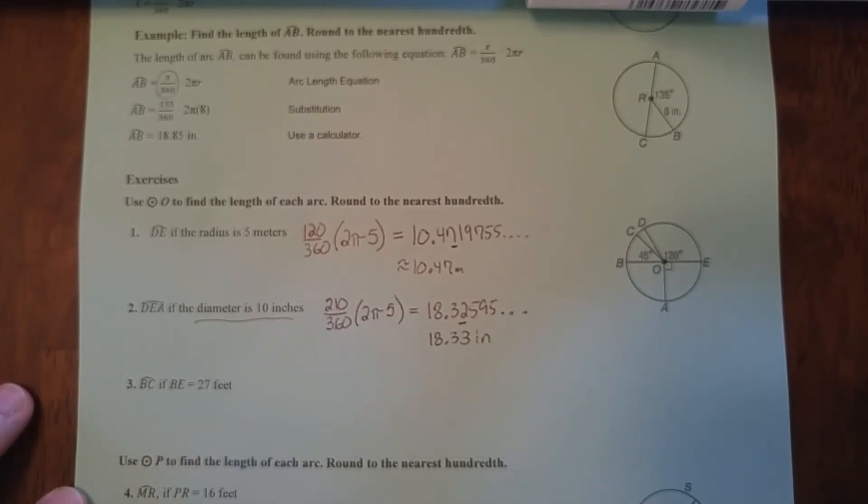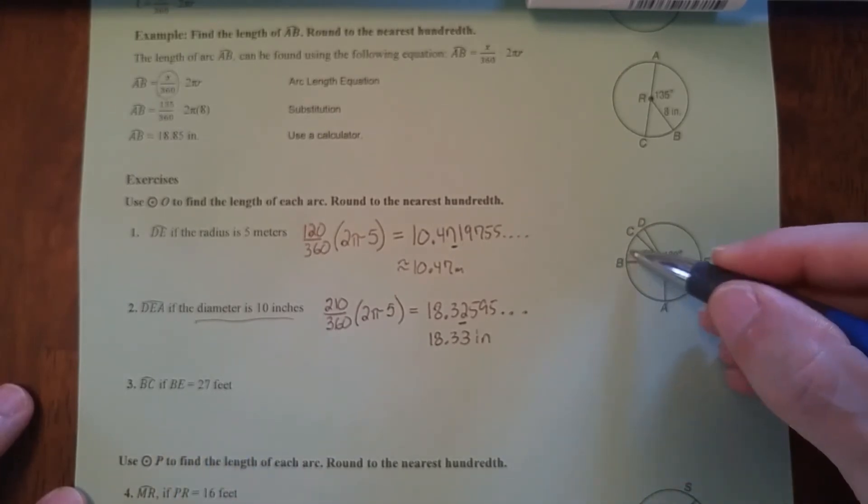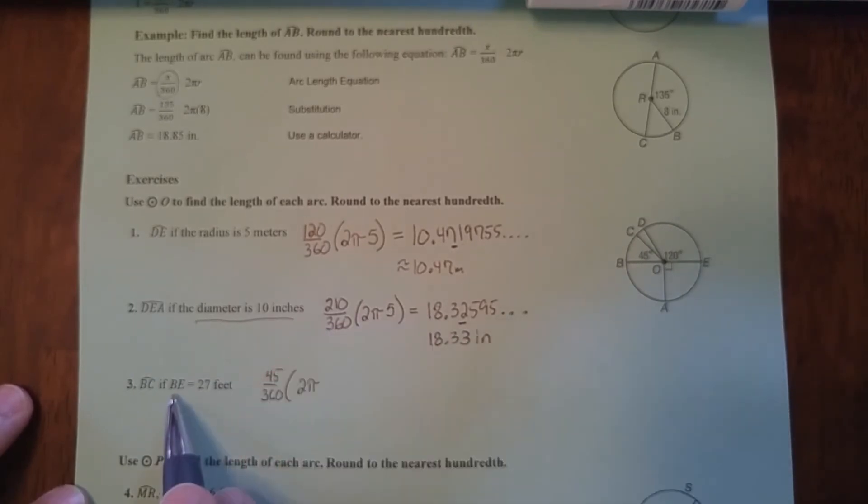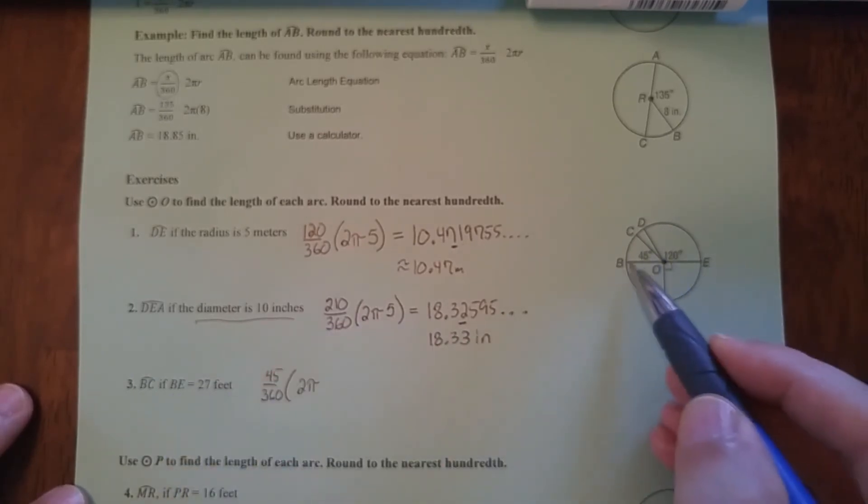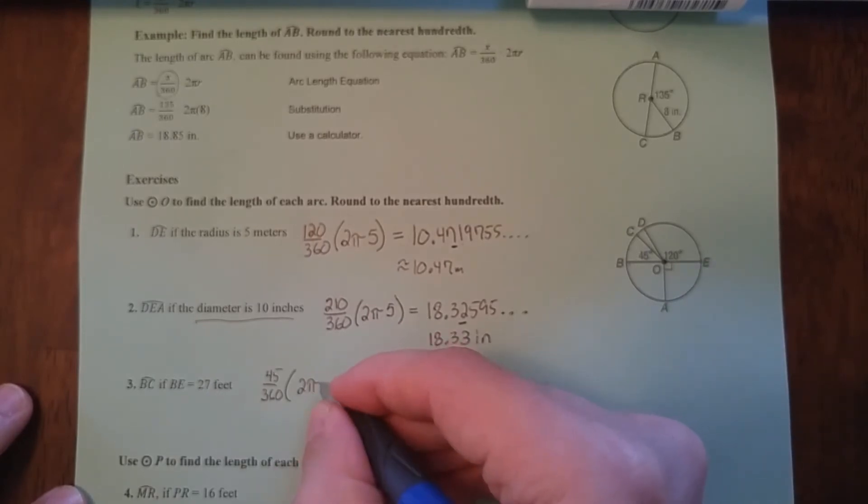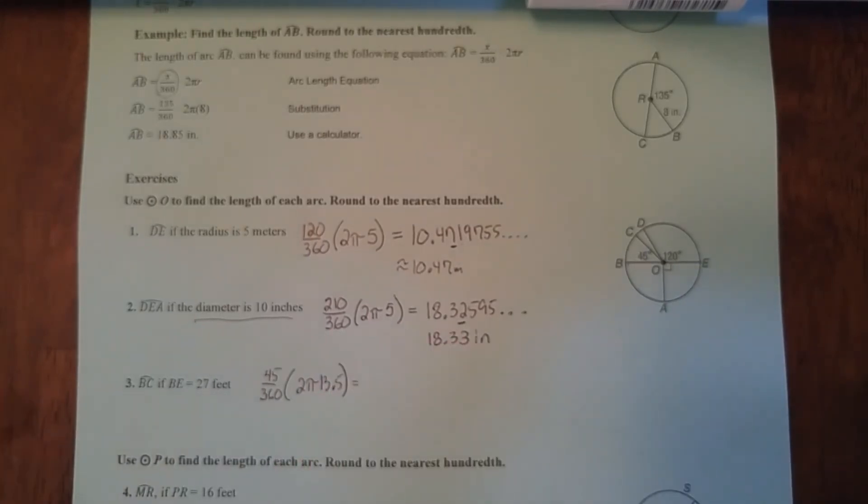Right here, arc BC if BE is 27 feet. BC is 45 degrees. Now again, we're given a diameter. BE is 27 feet. There's B, there's E. That's a diameter. Half of 27 is 13.5. We get this using π. Rounding to the nearest hundredth. Since that's not five or more, we get that.